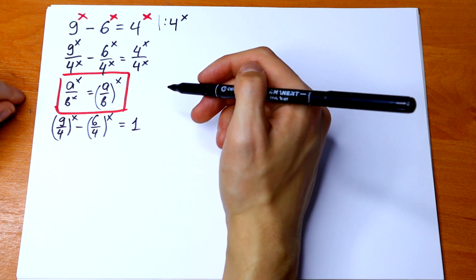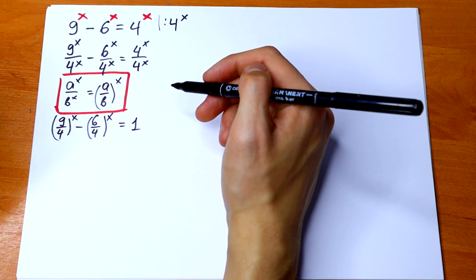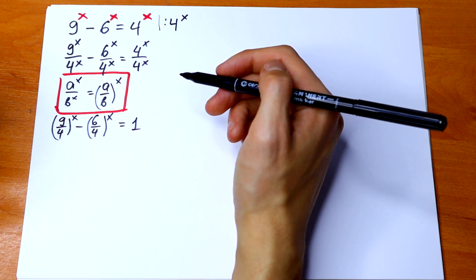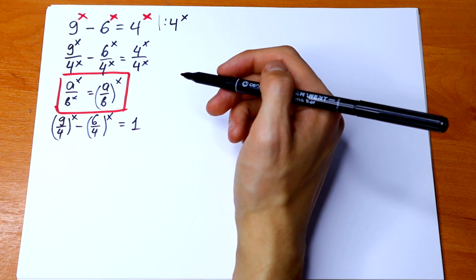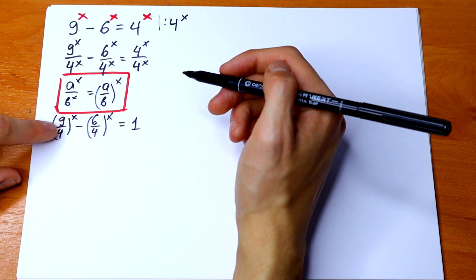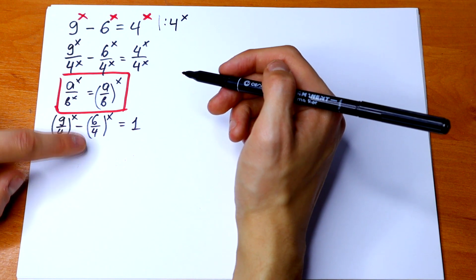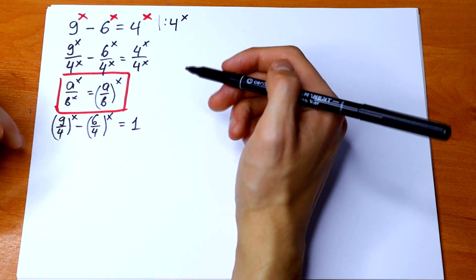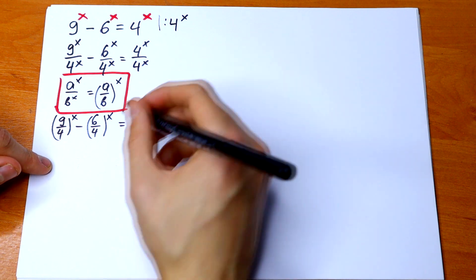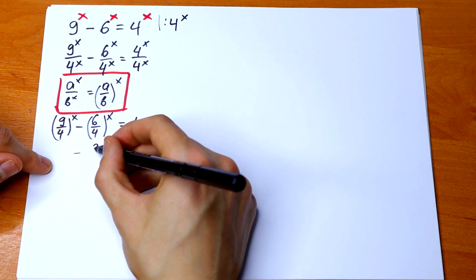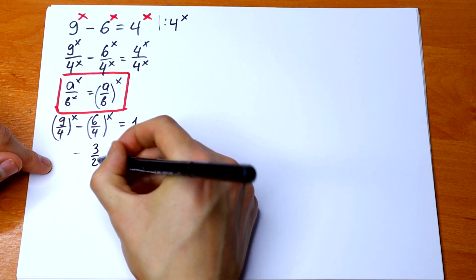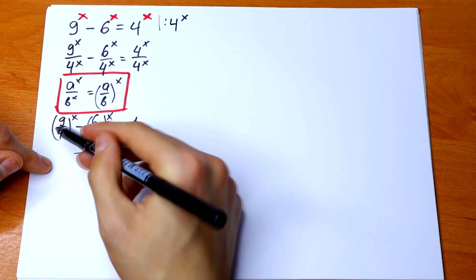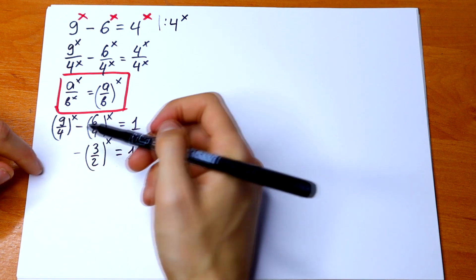So we have an interesting exponential equation. We can simplify a little bit — 6 over 4 simplifies by dividing by 2, giving us (9/4)^x minus (3/2)^x equal to 1.